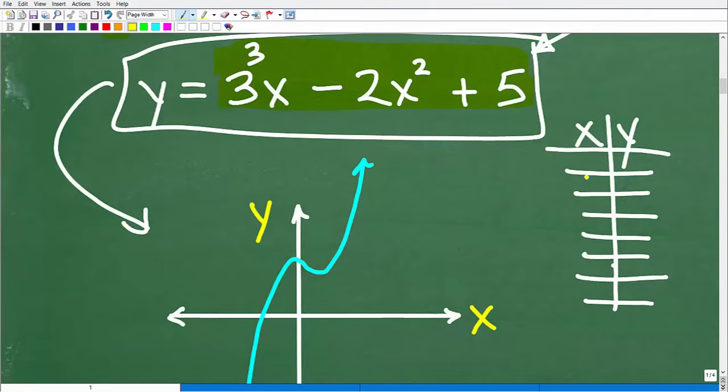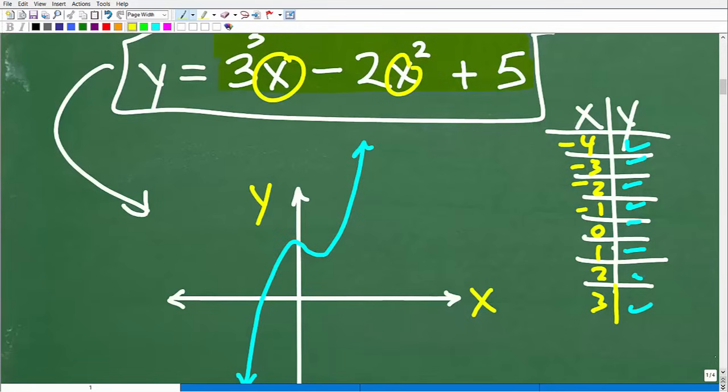I could put in a bunch of random numbers like -4, -3, -2, -1, 0, 1, 2, 3. I could construct a table of values for x, put in those respective x values into here, and I would get some associated y values out. These would be points on this graph.